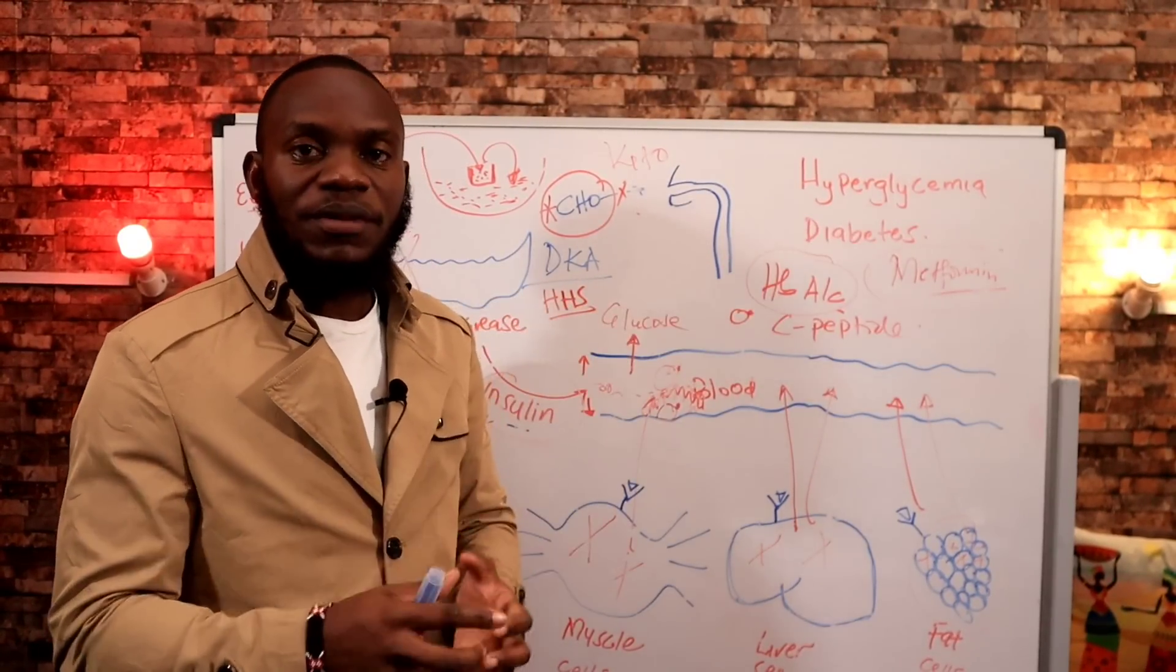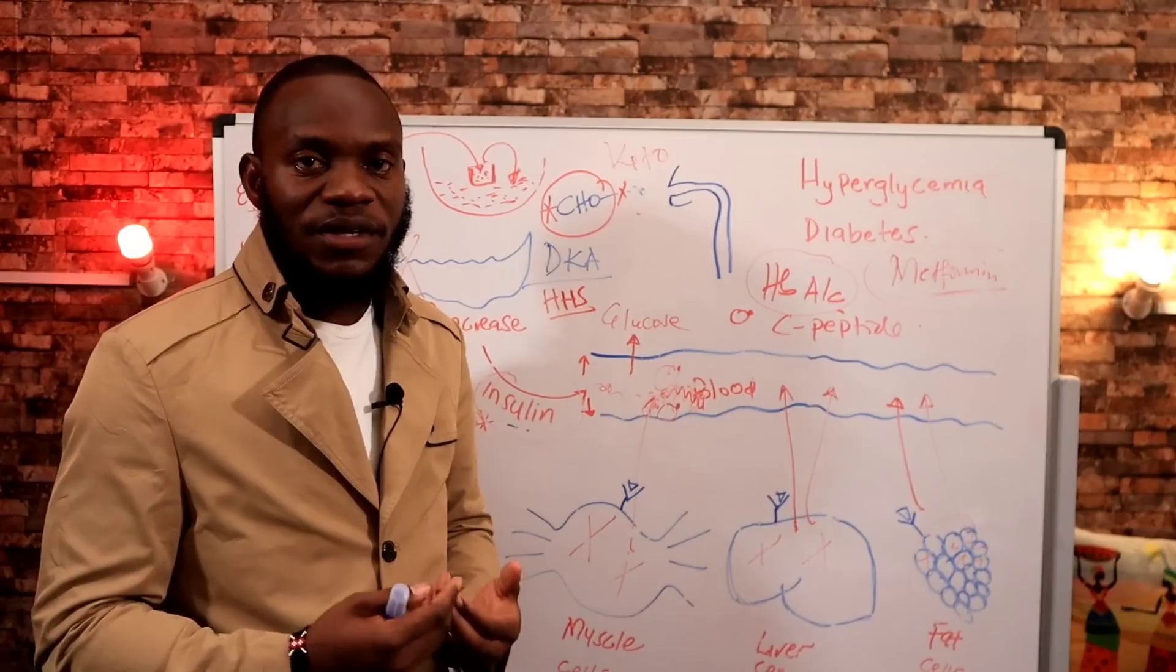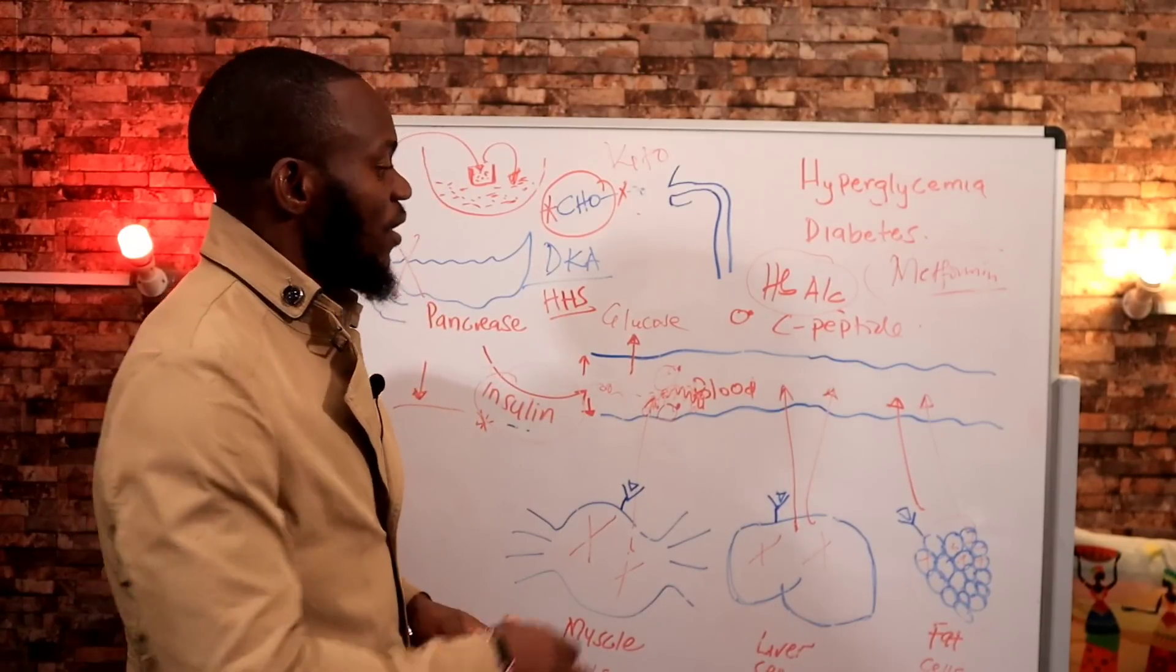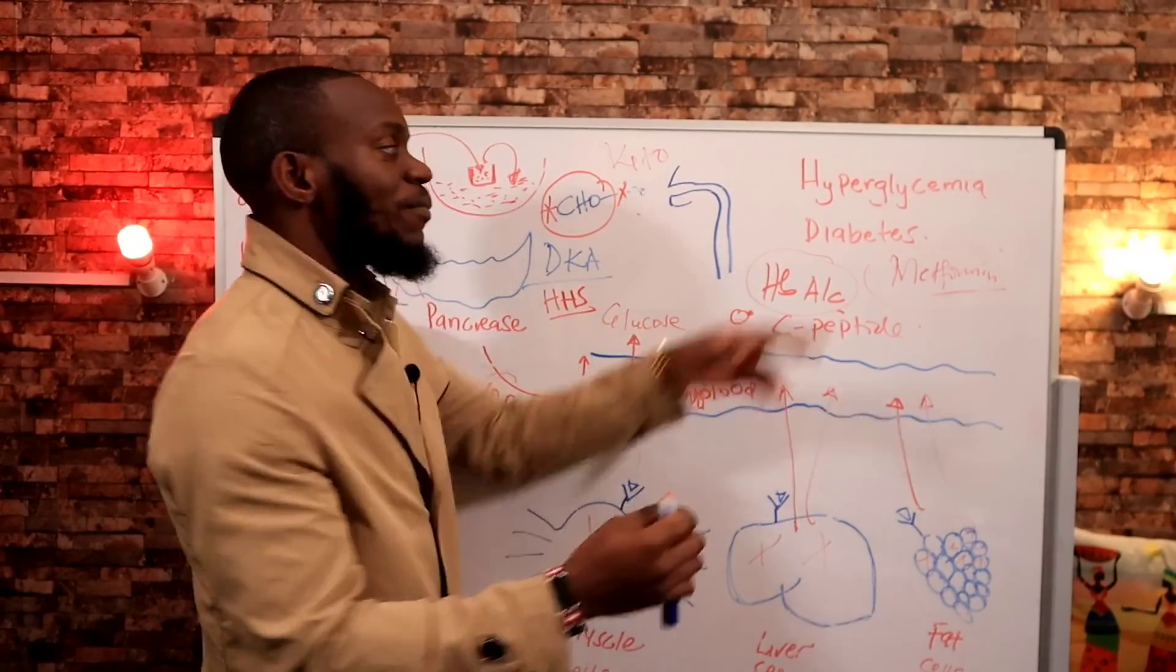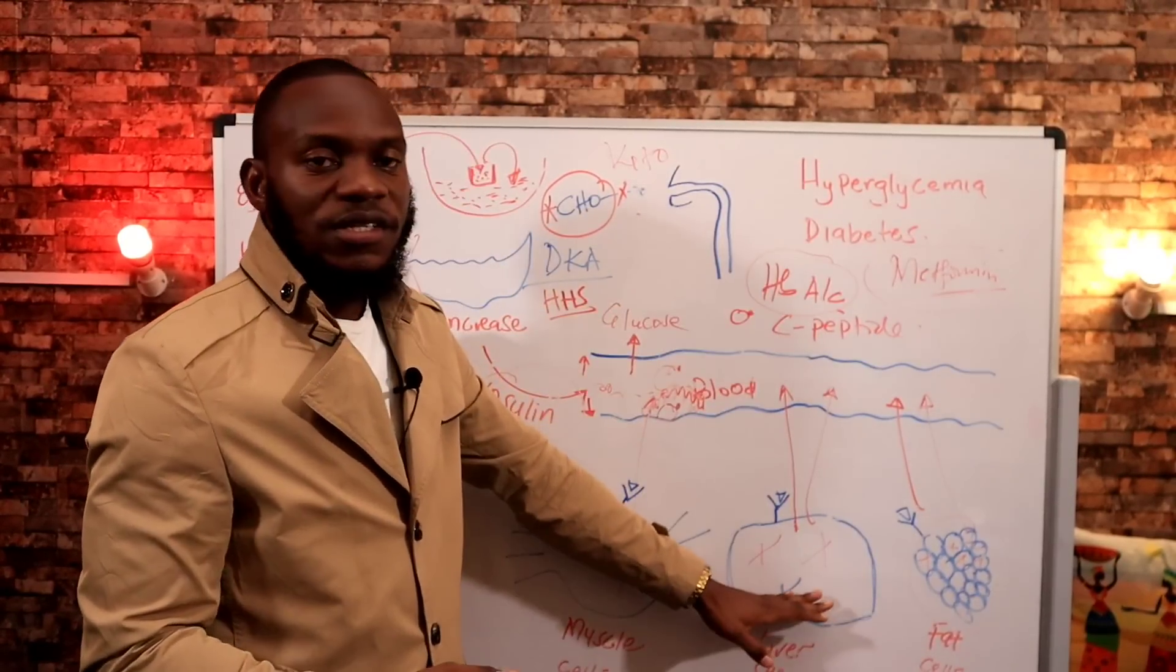Now drugs for diabetes, be it insulin or metformin, what it does is it activates insulin so that it pumps blood glucose levels, which is hyperglycemia, into the cells.